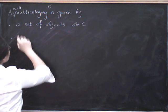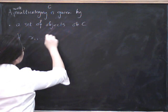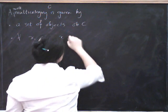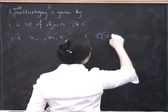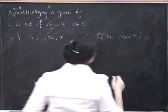And for all... Well, now we're going to have a string of objects as the source, and one object as the target. We have a set of morphisms C from x1 up to xn to x of morphisms.